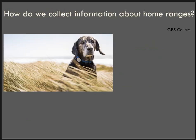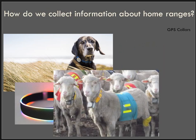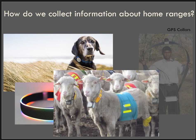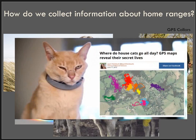How do we collect information about home ranges? What we're going to be using are data points from GPS collars that are placed on the animal. They come in all shapes and sizes. We've got collection information on sheep, on elephants, on cats. Where do house cats go all day? GPS maps reveal their secret lives. This is kind of what the data might look like — a series of points that has been converted to tracks to show where animals are going.